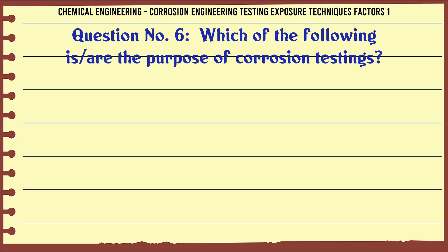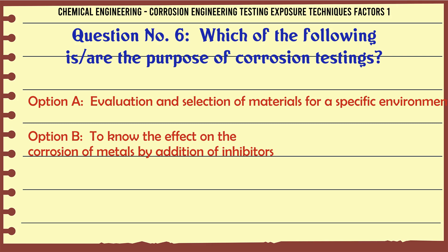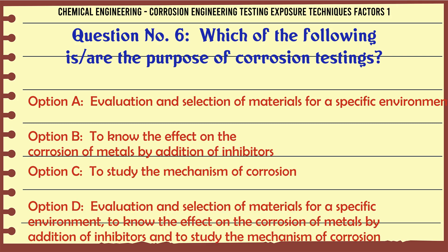Which of the following is/are the purpose of corrosion testing? A. Evaluation and selection of materials for a specific environment. B. To know the effect on the corrosion of metals by addition of inhibitors. C. To study the mechanism of corrosion. D. Evaluation and selection of materials for a specific environment, to know the effect on the corrosion of metals by addition of inhibitors, and to study the mechanism of corrosion.